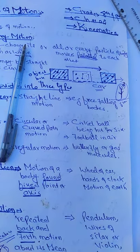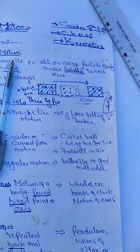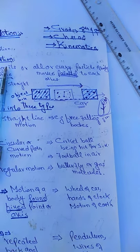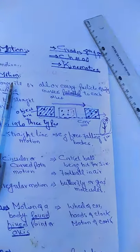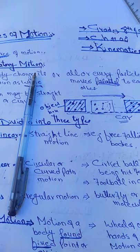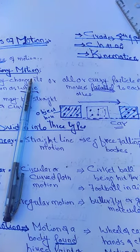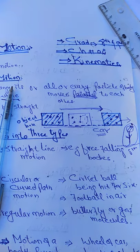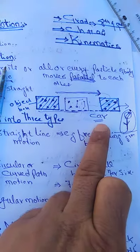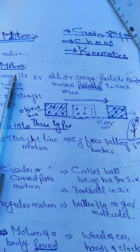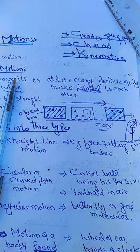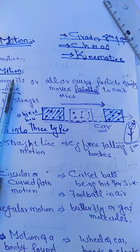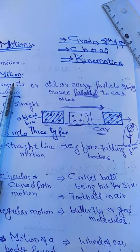Every particle moves in the same direction in translatory motion. For example, consider the motion of a horse, or a ball, or a car, or a falling object, or flying birds. When birds fly in the air, both their wings flip in the same direction and they move in a straight line or curved path. Similarly, for a car, the entire body of the car moves as a whole in one direction.